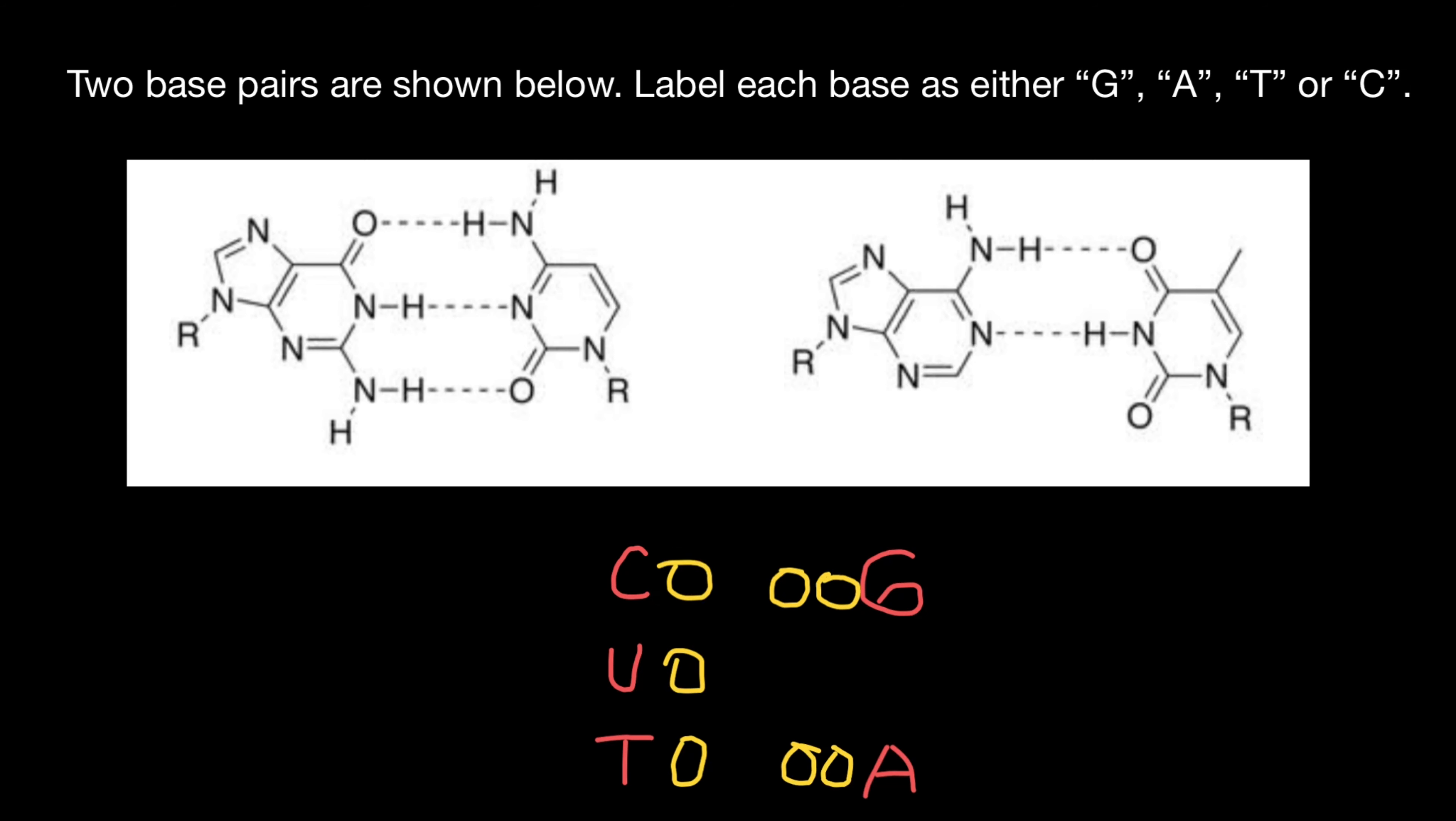C and G are more similar than, for example, T and A. Just like, for example, relatives would look similar if we compare with people who are not relatives.